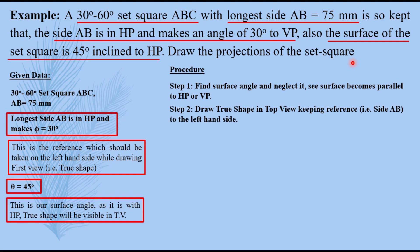Then the second step: draw true shape in top view keeping reference, that is side AB, to the left hand side. Here this is the longest side AB which is in HP and making an angle phi equals to 30 degrees. You have to remember to take that reference in the left hand side while drawing the true shape.